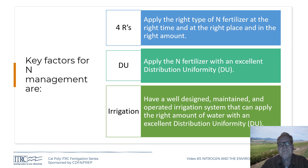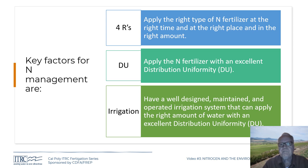Distribution uniformity, or DU, is also critical. If you put twice as much nitrogen on one area as another — a DU of 0.5 — it's very difficult to utilize the nitrogen efficiently. You want to apply it evenly. If you're applying water through the irrigation system, you cannot apply it evenly without a good DU. You need a well-designed, well-maintained, and well-operated irrigation system with excellent DU, and the fertilizer application follows from that.